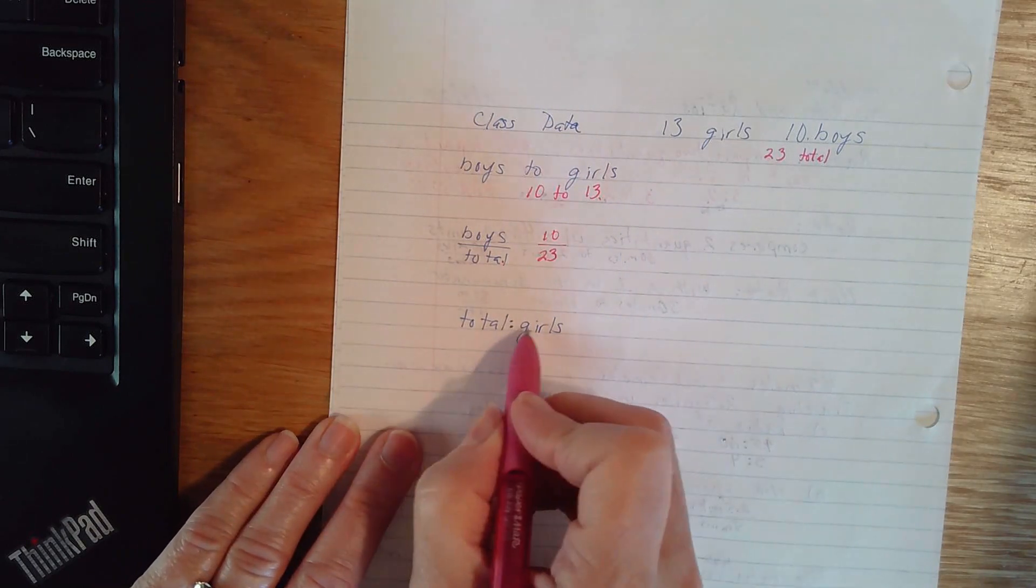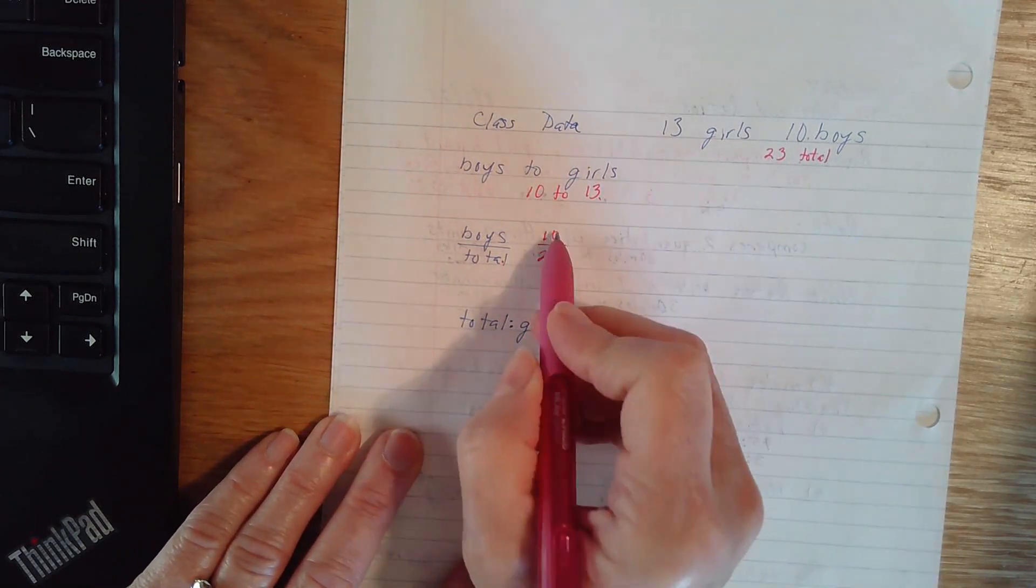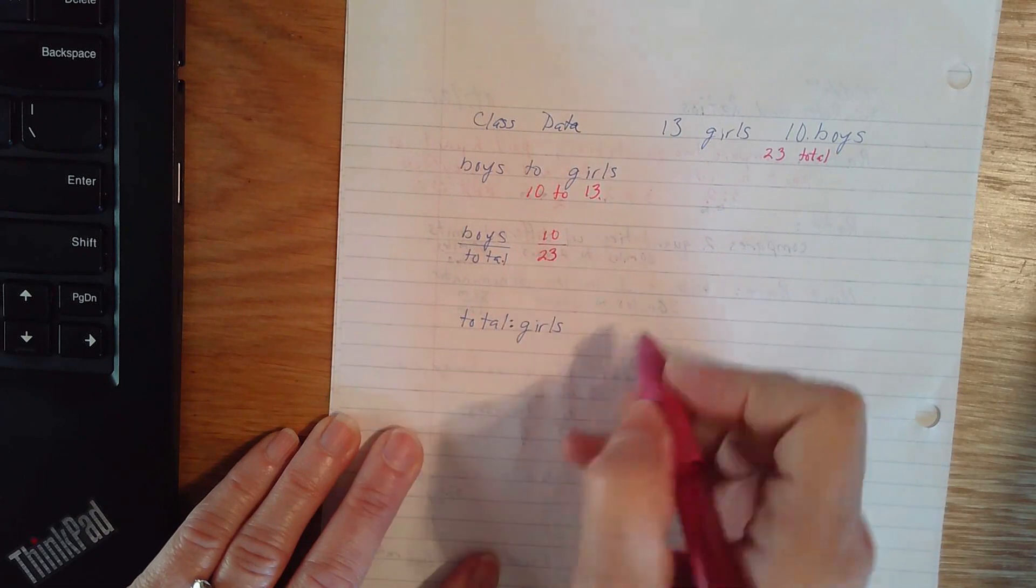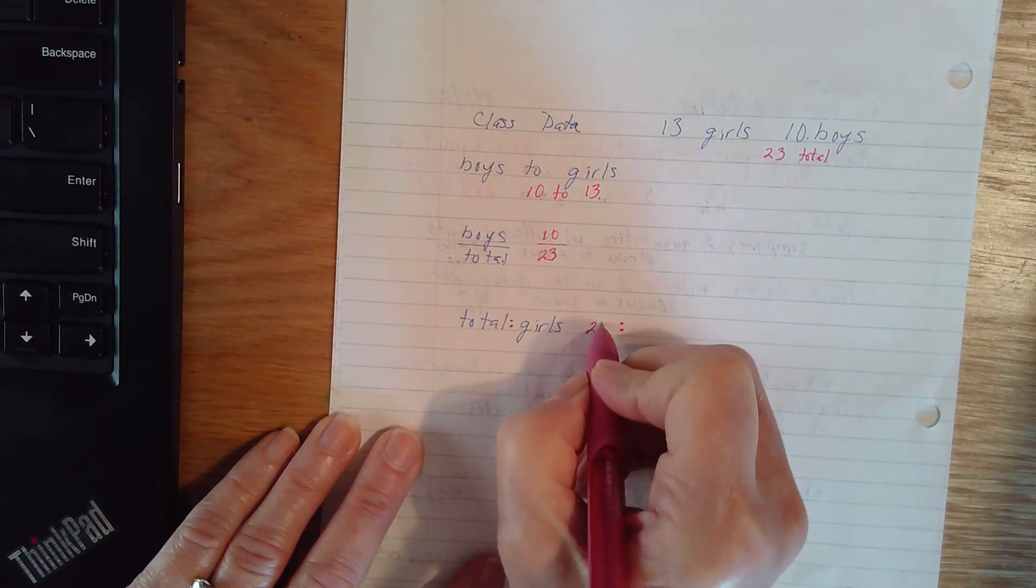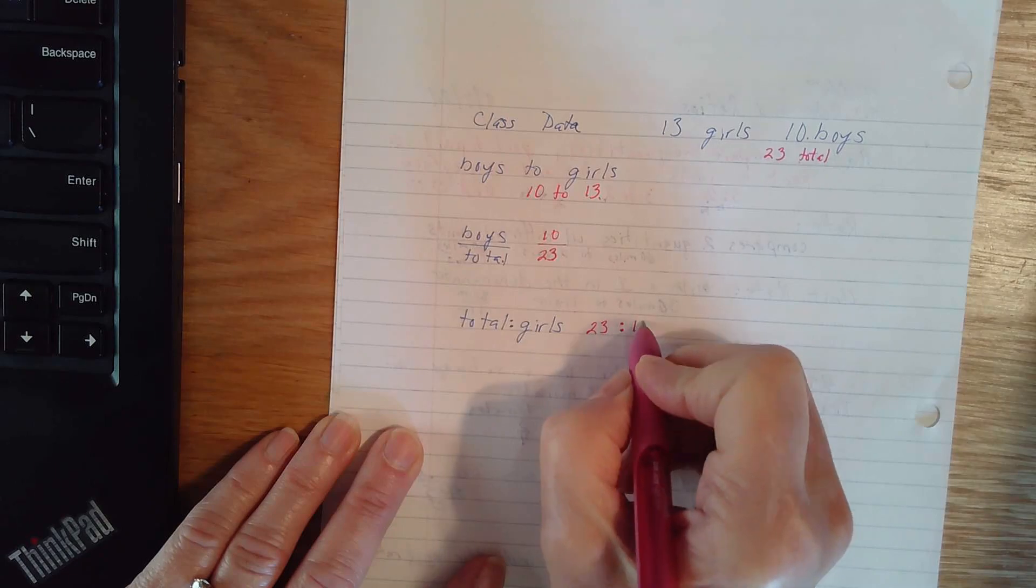If I wanted to do the total to girls. Again, this was written in a fraction format, so this one needs to have the colon. 23 total to 13 girls.